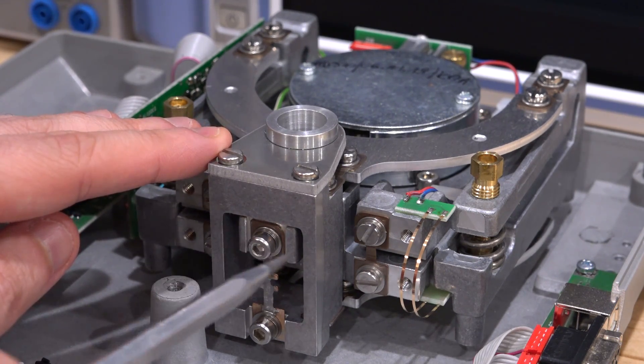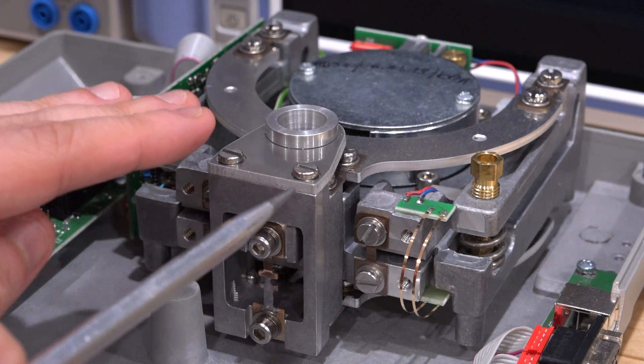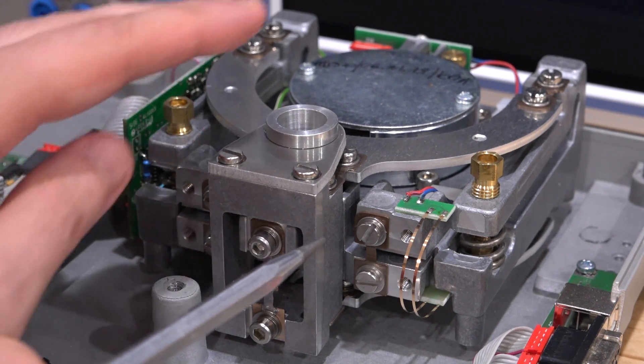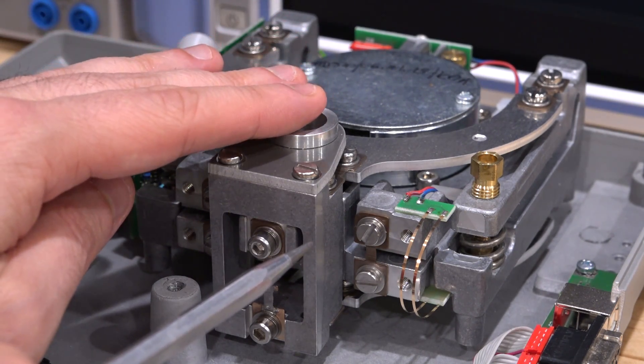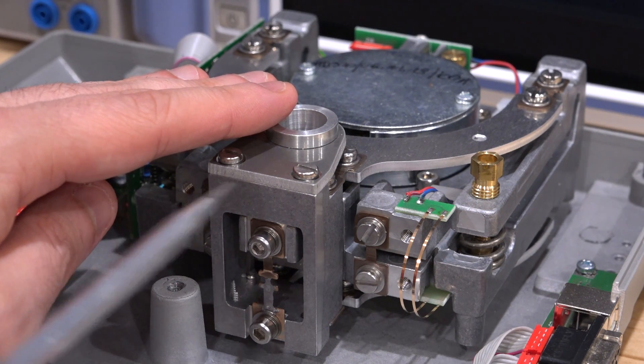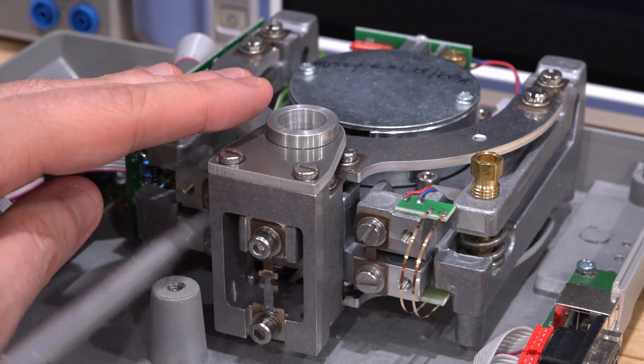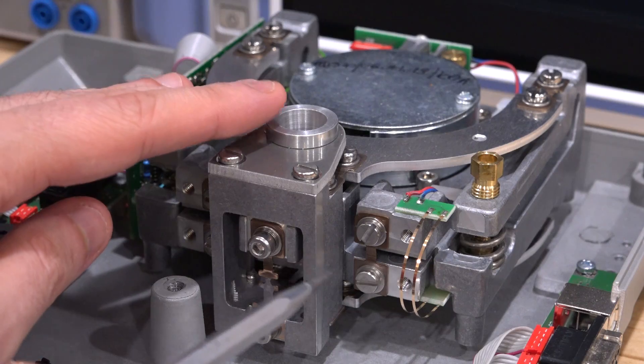And the system constantly tries to balance this and hover it right in the middle such that that optical sensor is essentially at its threshold. Now imagine I add weight on top of this. As soon as I do that, I will disturb that optical sensor equilibrium point.